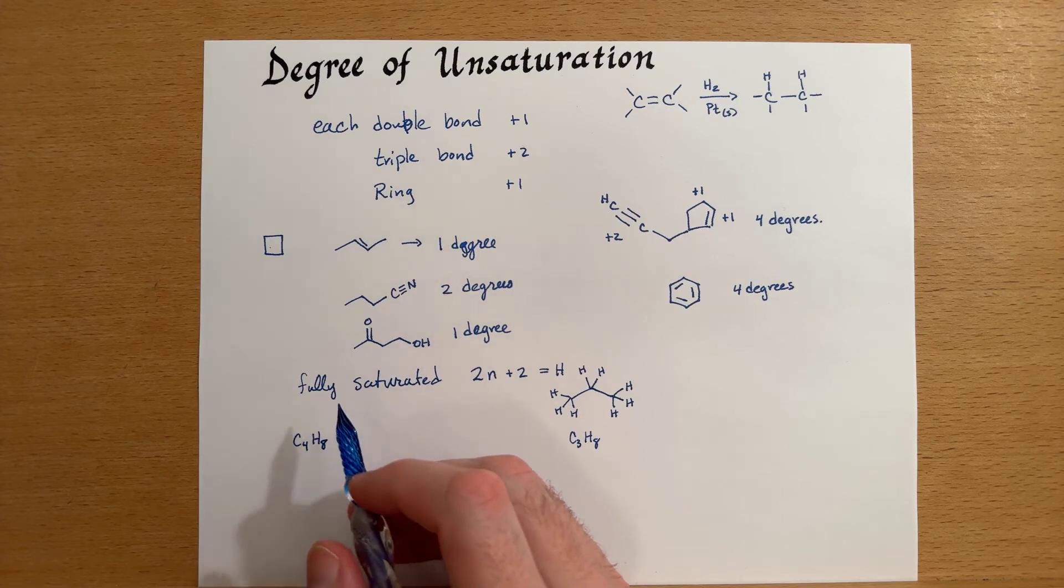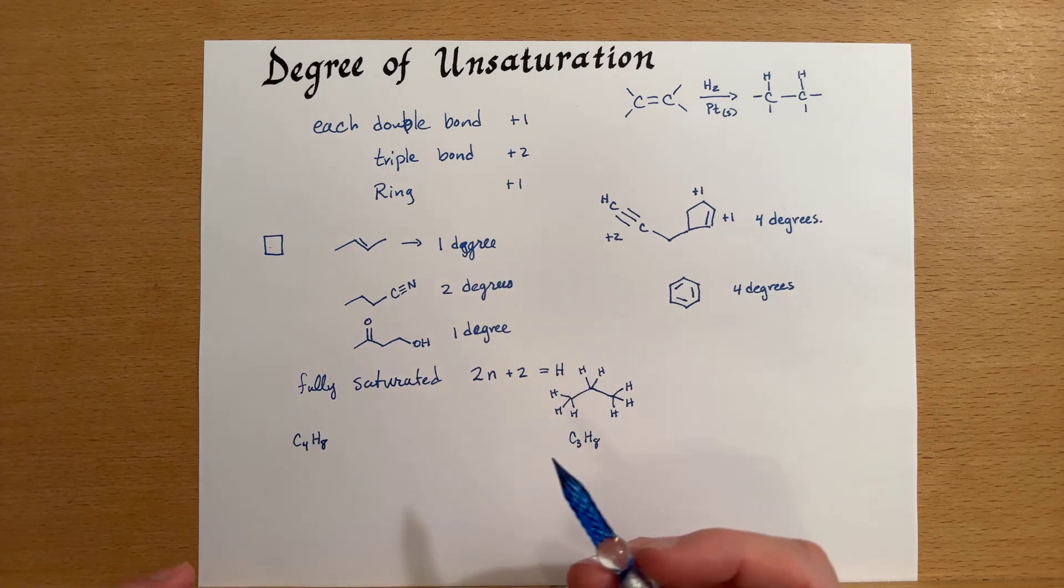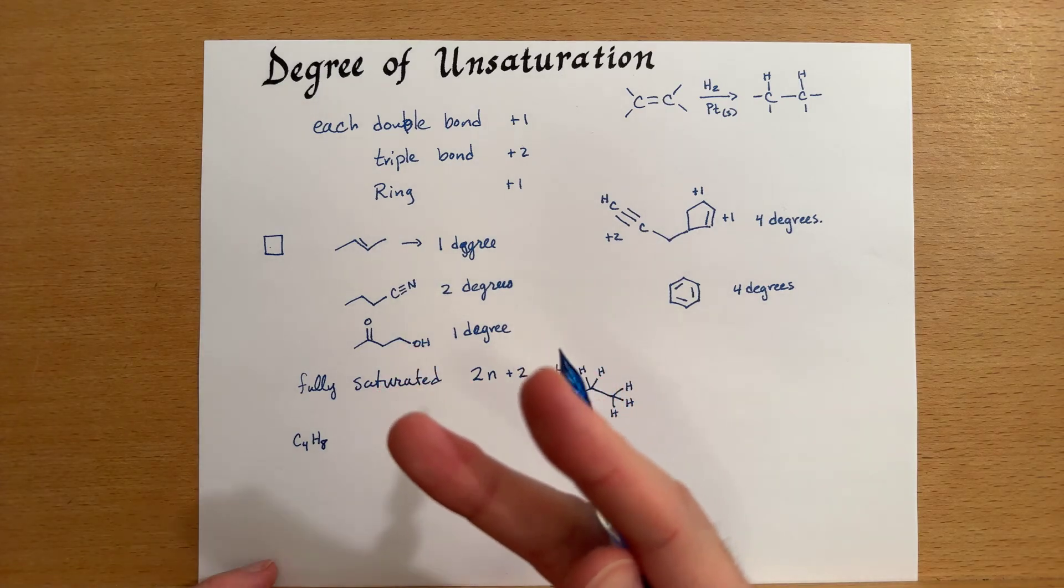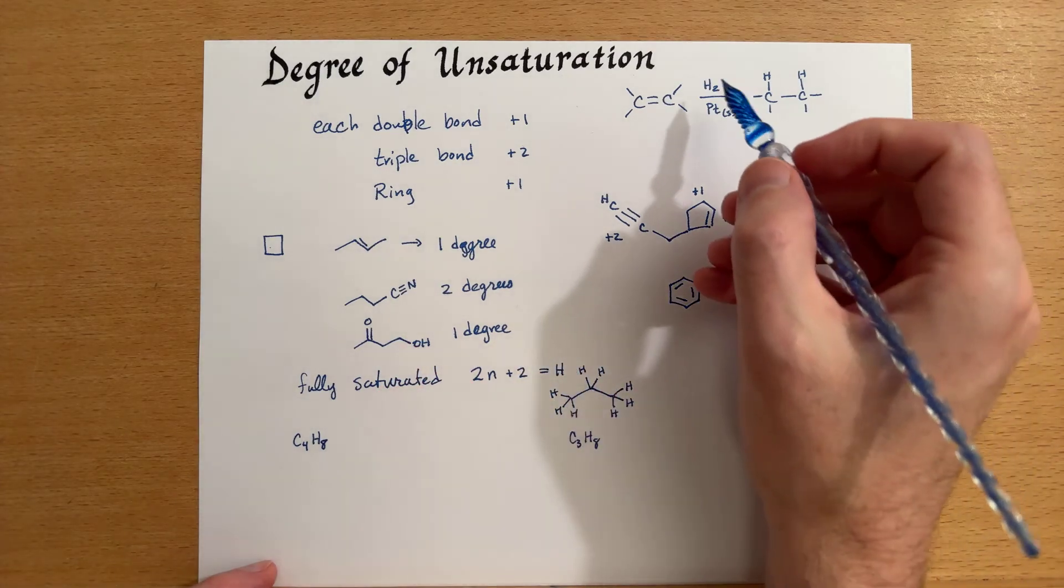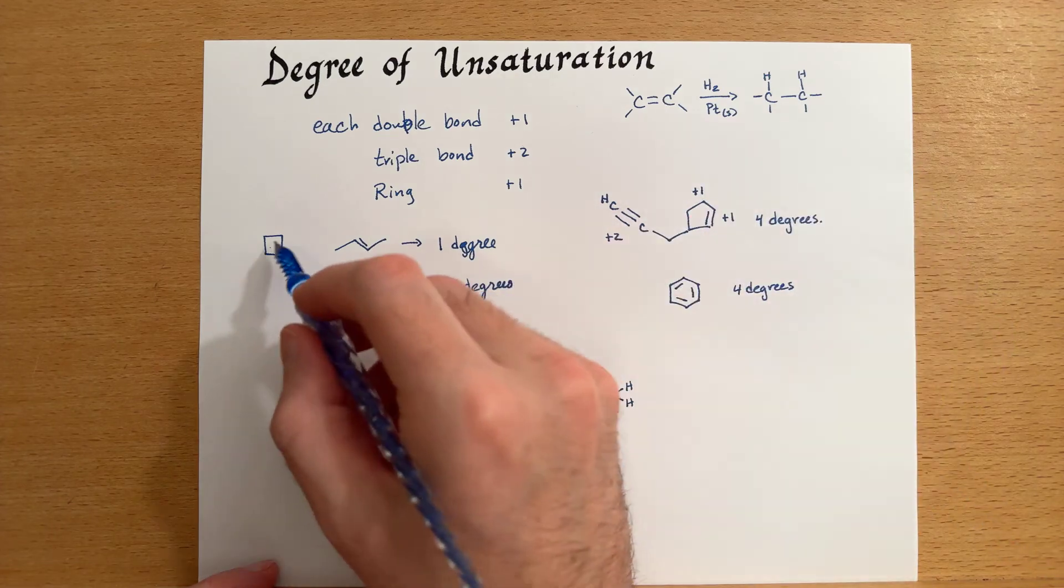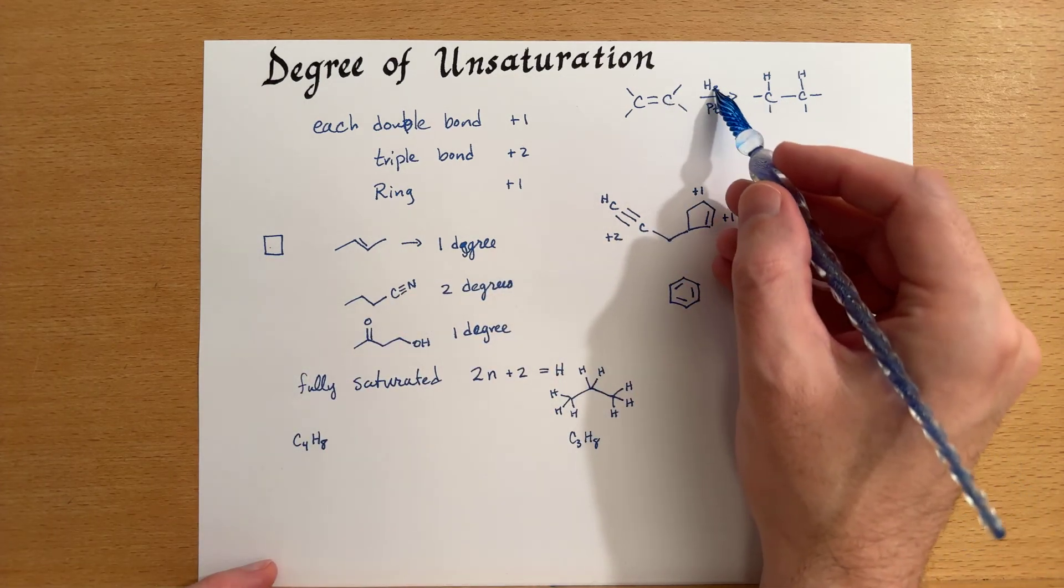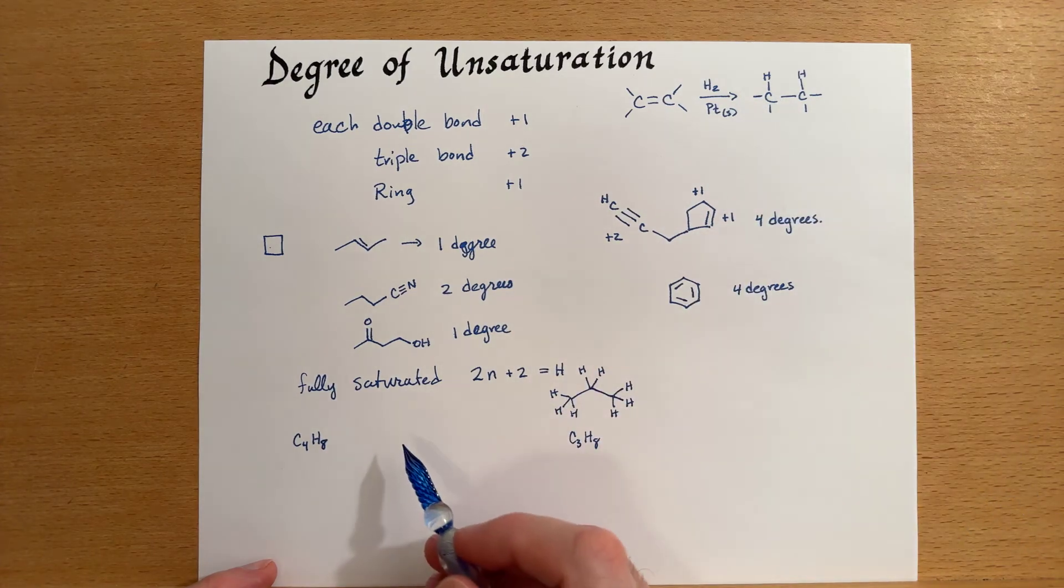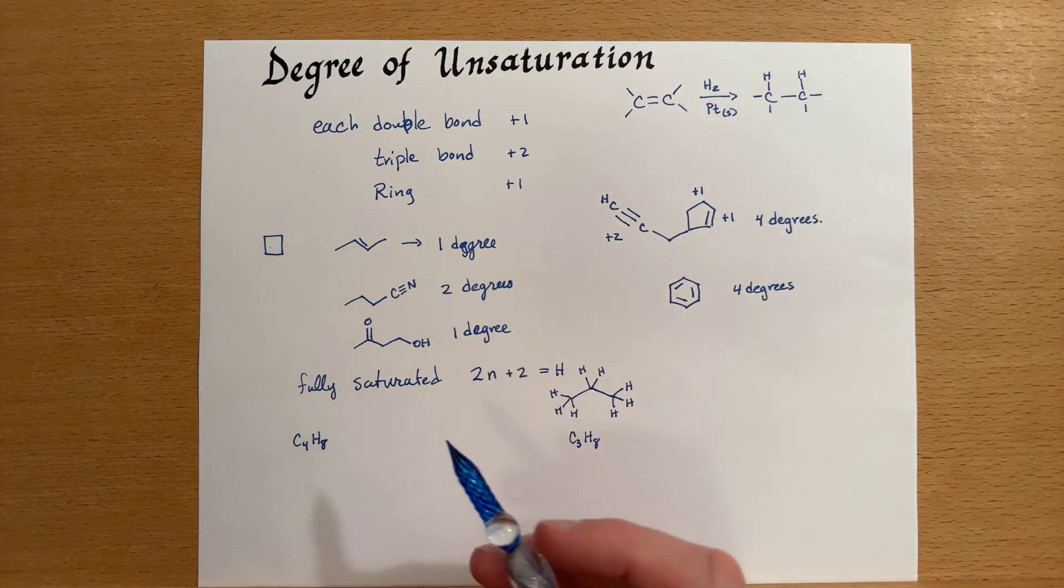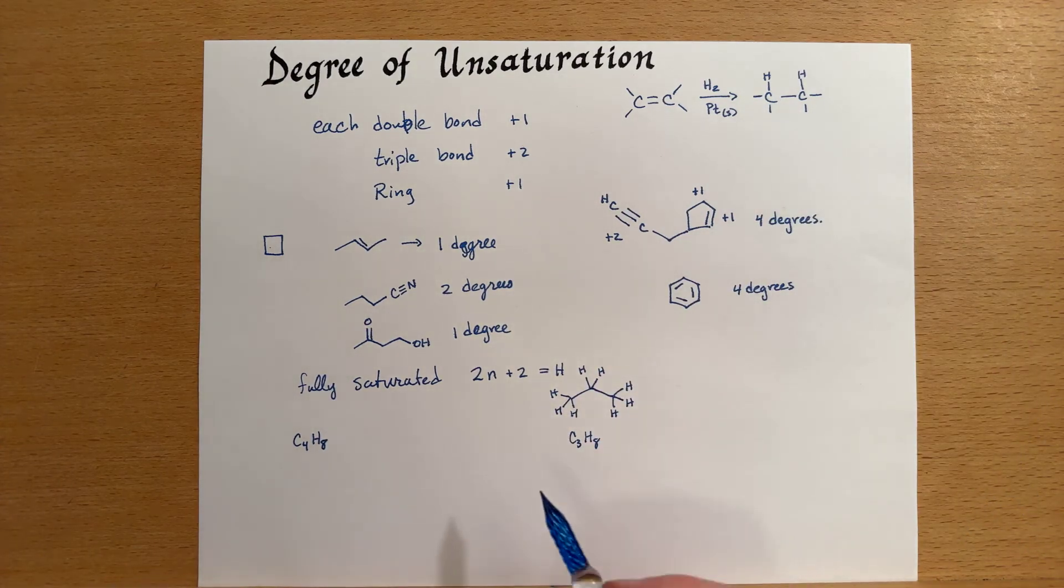That means that there is one degree of unsaturation because there are two less hydrogens. Remember, for every double bond or ring, we subtracted two hydrogens to get there. So that's how you can determine it based on a chemical formula.